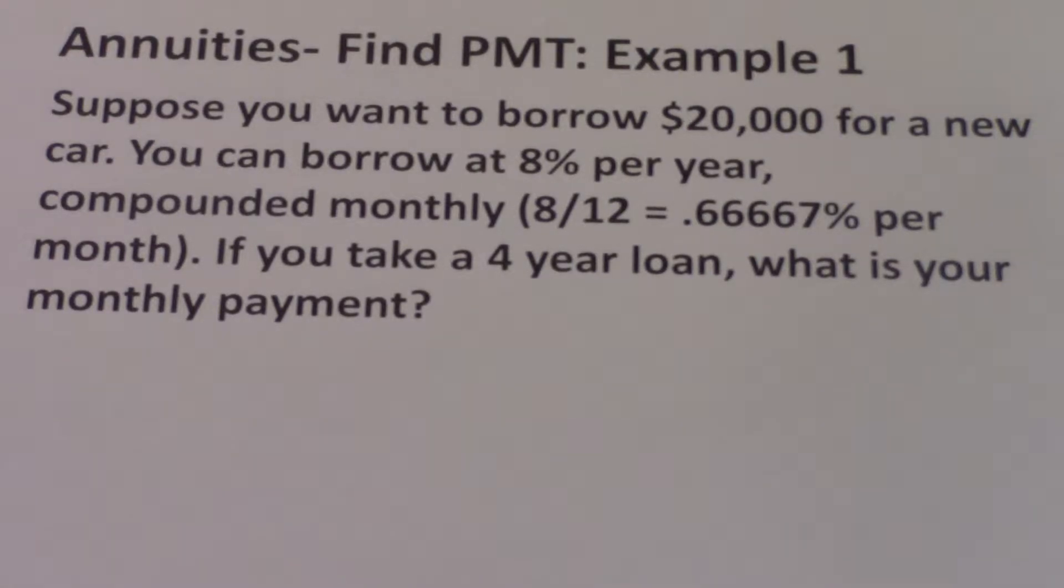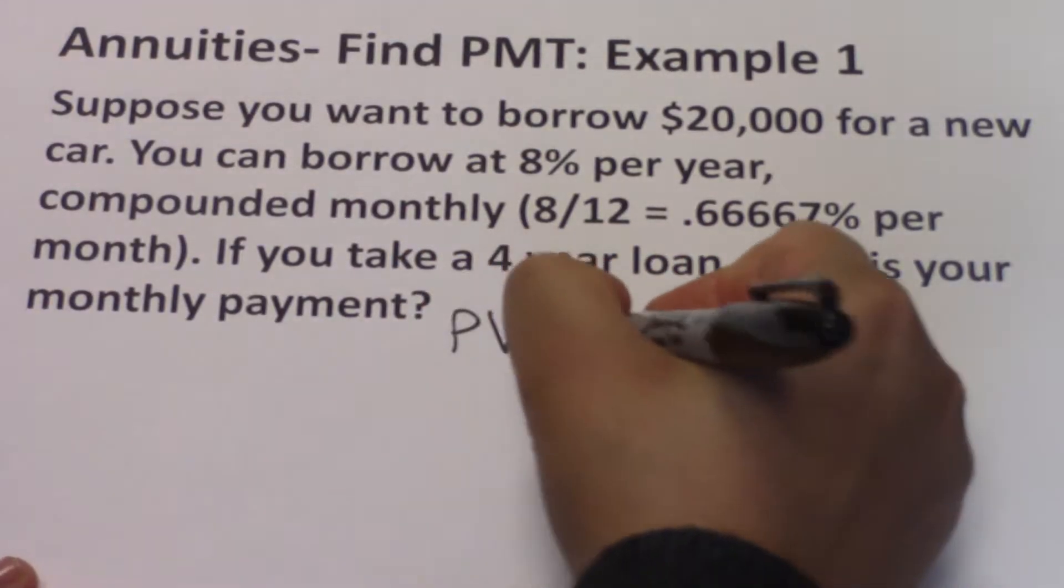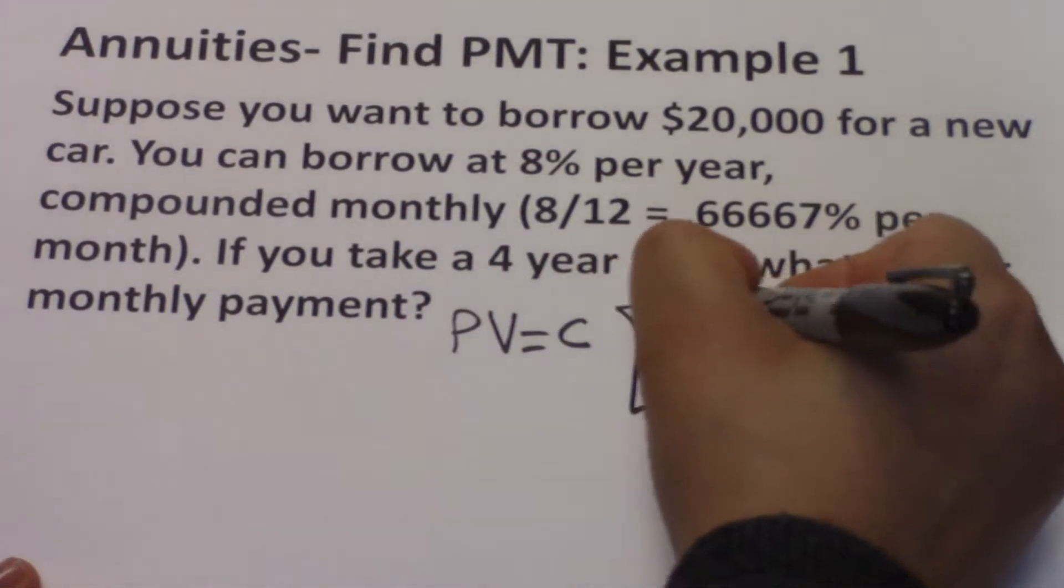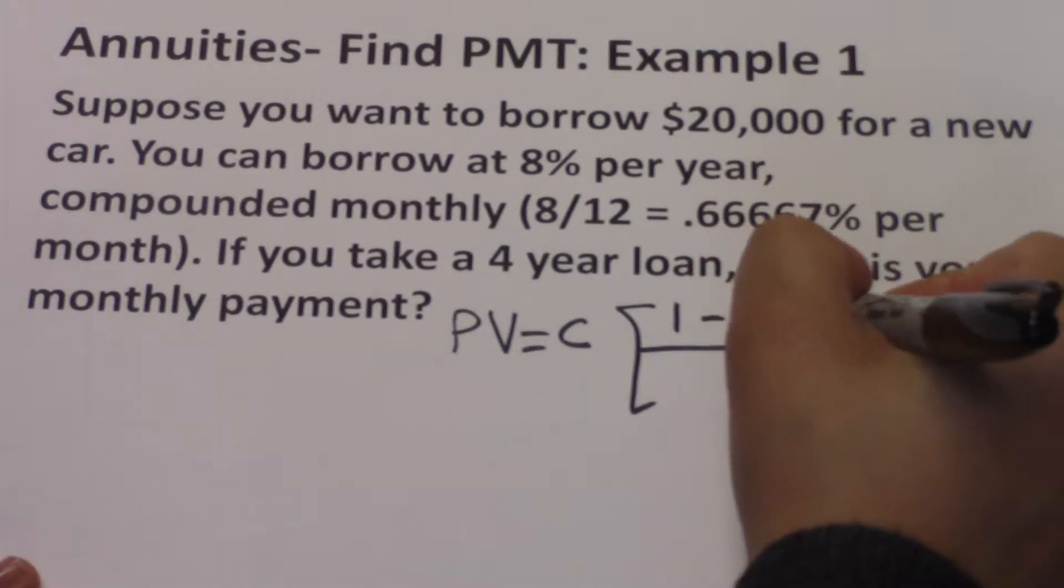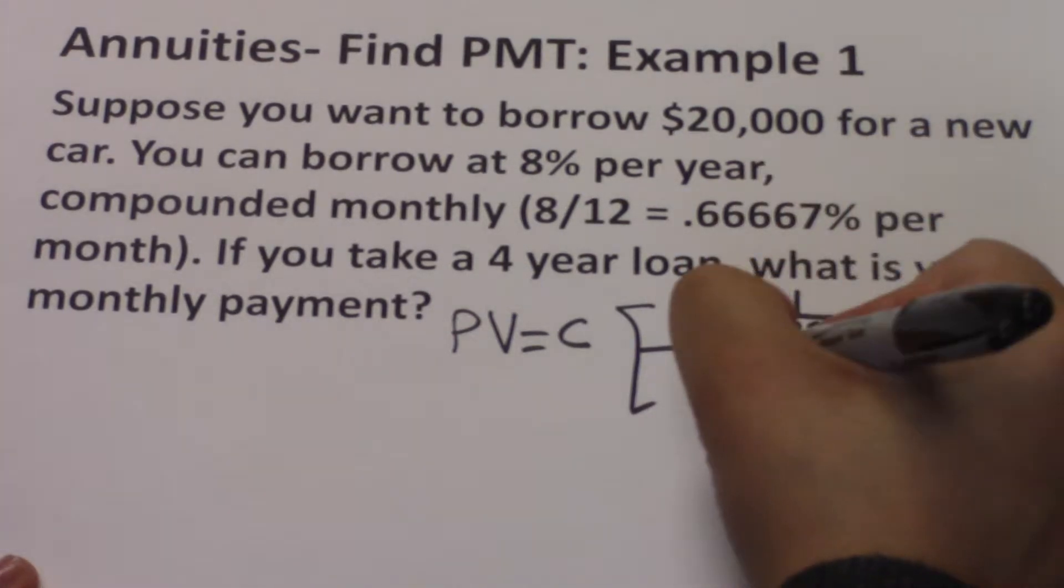We're dealing with an ordinary annuity, or the present value of an ordinary annuity. The formula is PV equals C times 1 minus 1 over 1 plus R to the power T, over R.